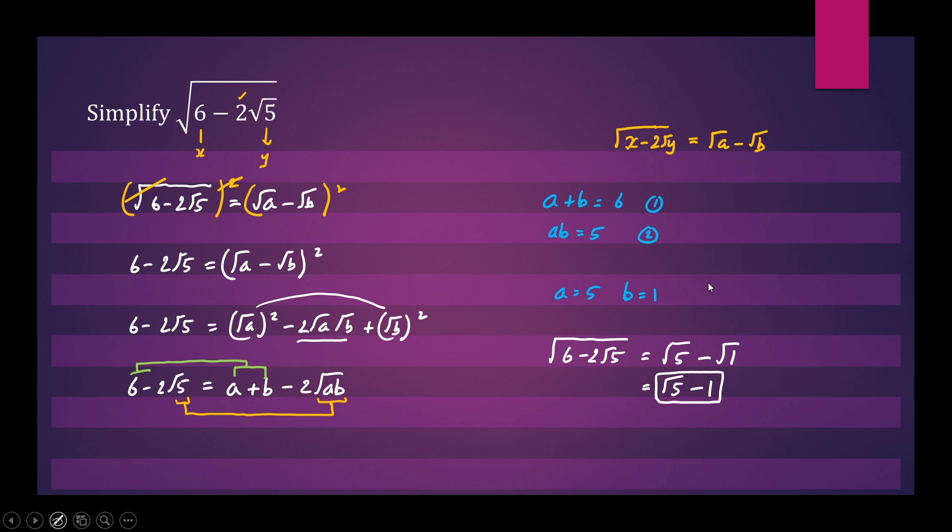Notice also that I didn't choose a equals 1 and b equals 5. These are both valid answers to this problem, but the problem is that we need to have the larger number first. If we had the square root of 1 minus the square root of 5, we'll end up with a negative number, which we don't want.